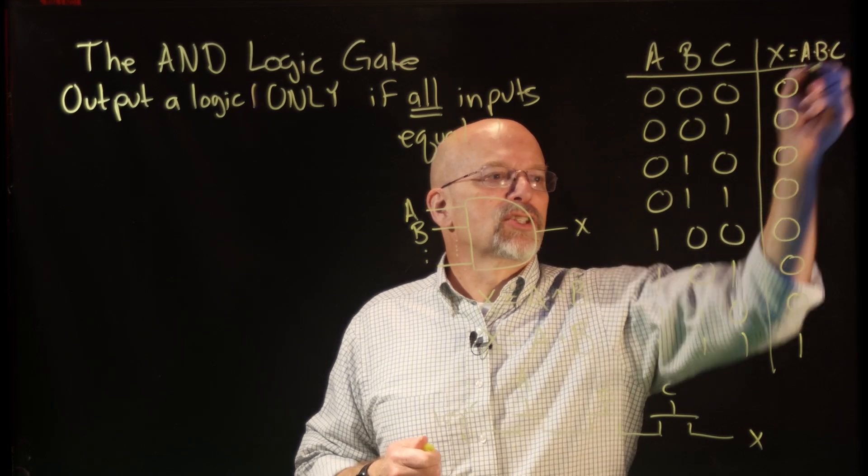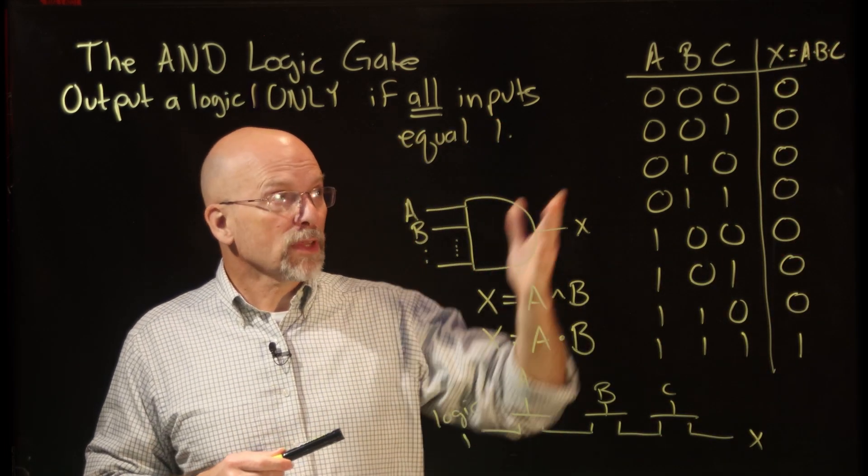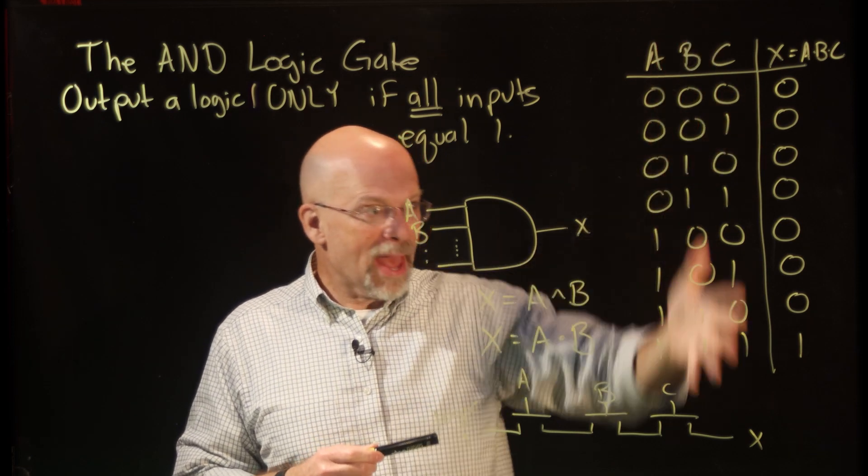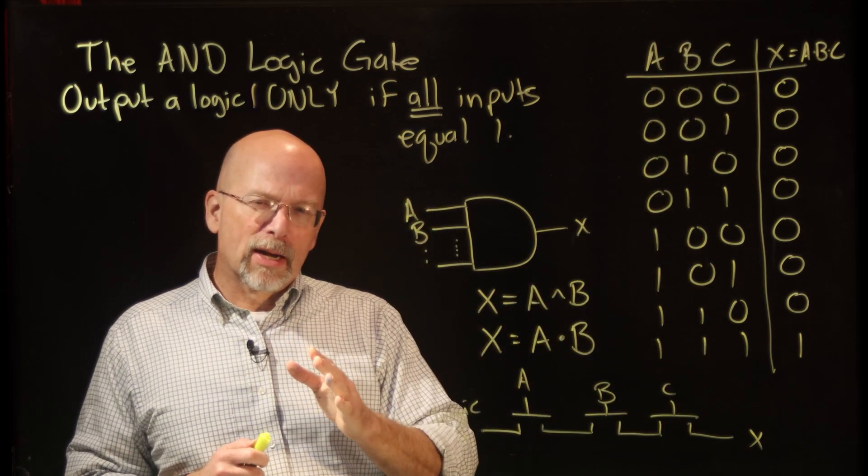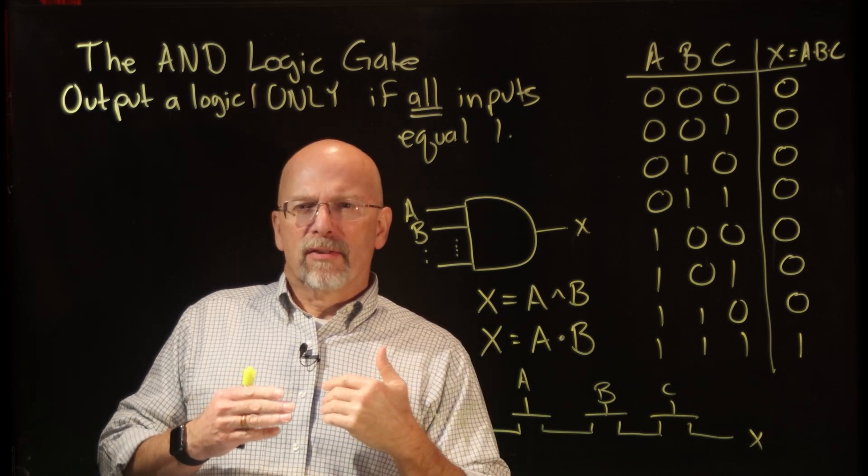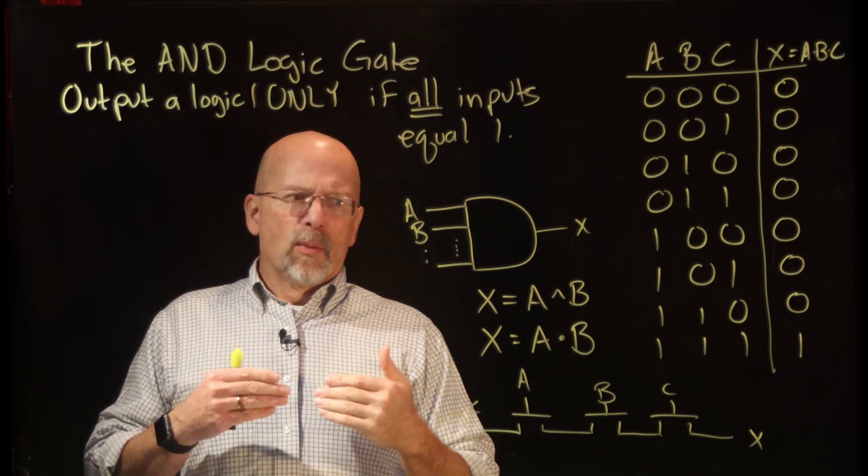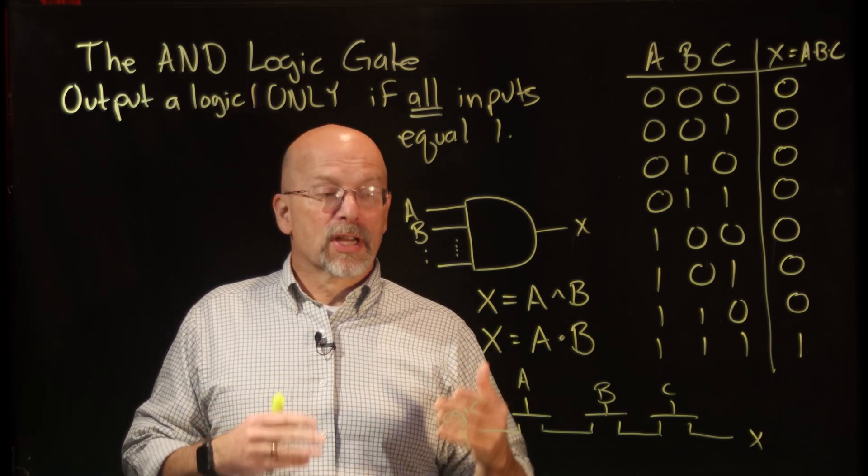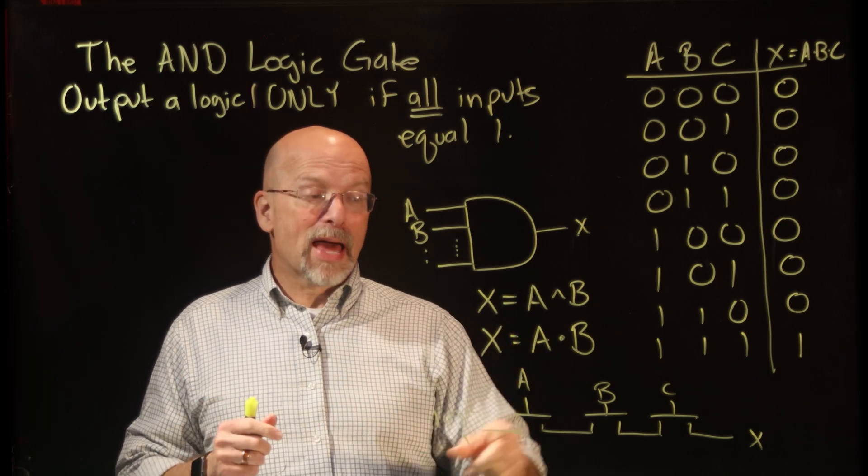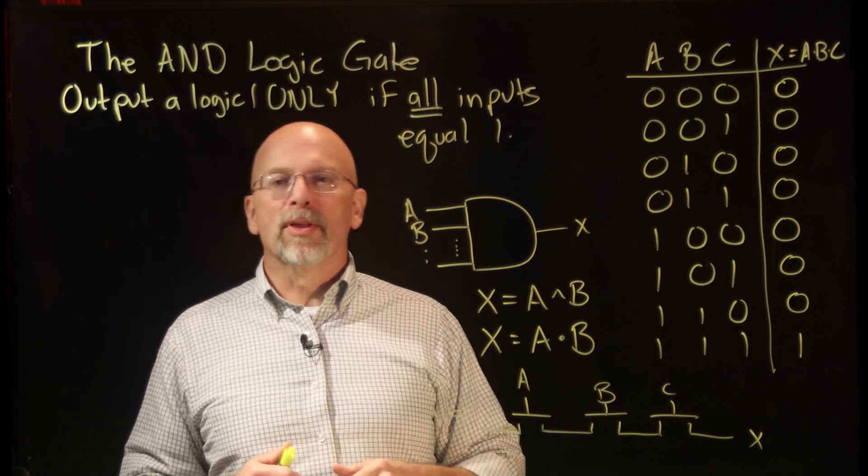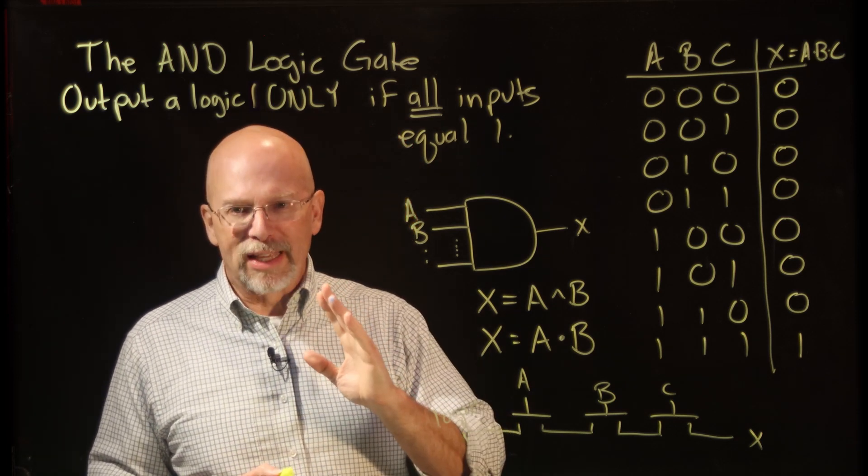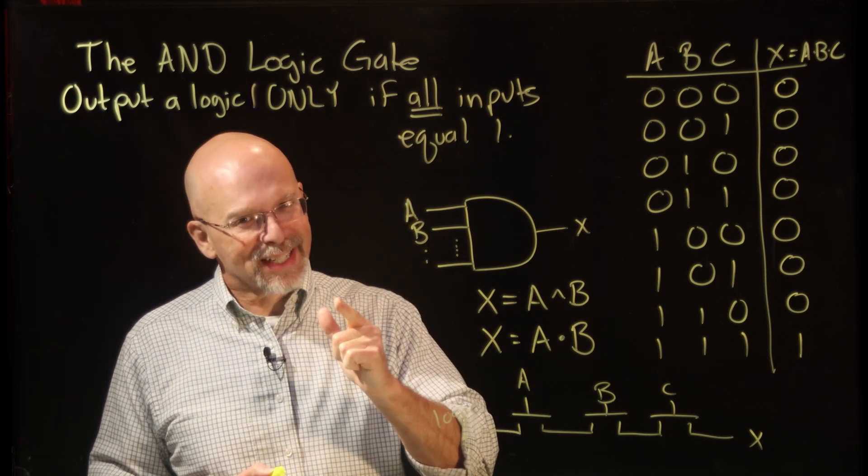So this guy up here, what is this equal to? Well, this X up here is equal to A·B·C. We have a way of representing this truth table. Another thing that we're going to talk about a little bit later is this idea of order of precedence - which operations get done first. It turns out that mathematically the dot links well with the symbol that we're going to be using to represent the OR, which is our next lesson.